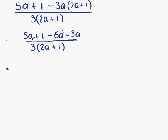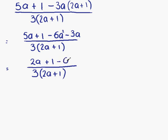We have some like terms on the top line that can be collected together. Putting down our denominator again: we have 5a and minus 3a, which gives 2a. We still have our plus 1, and we have our minus 6a squared. We now have a single fraction. What we need to do now is see if it can be simplified. We notice that we have a trinomial expression on the top that could possibly be factorised. If something on the top can be factorised, we should try, because we may get something that cancels with the bottom.